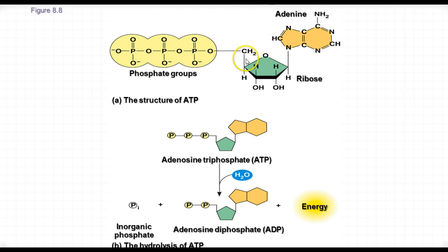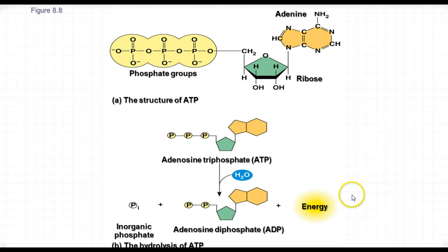We can hydrolyze ATP by the addition of water to remove one of those phosphates, plus some energy. The amount of energy released is a handy amount for cells to use. We can also regenerate ADP to ATP through other cellular processes and use these molecules all over again. So we can have a shuttling of energy either from ATP to ADP or from ADP to ATP to power the various processes in the cells.